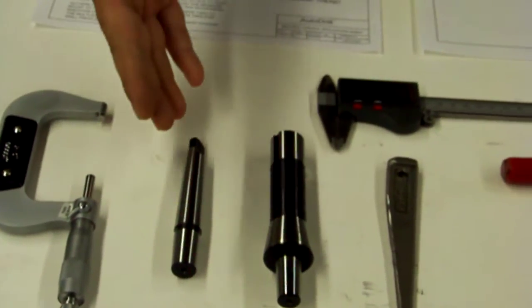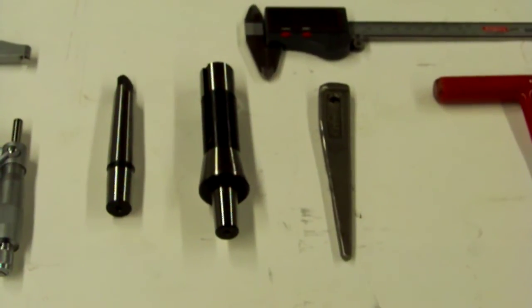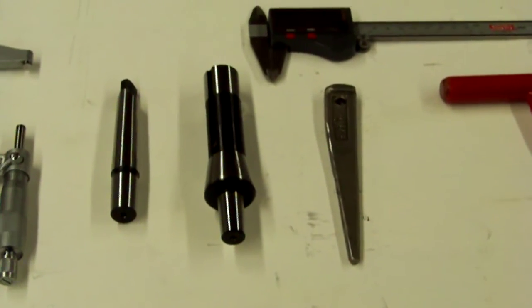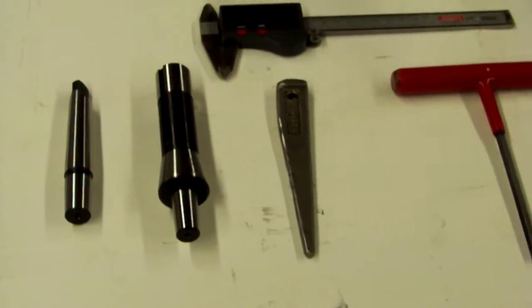You might come across that your machine has a Morse taper or perhaps an RA taper in the event of a Bridgeport or a light type milling machine. You'll need some of these tools in order to get the dimensions.